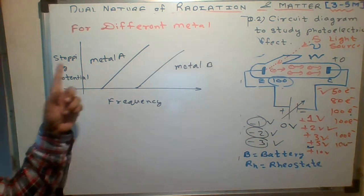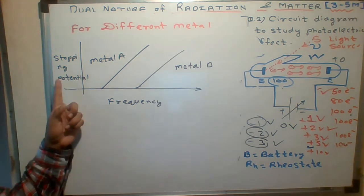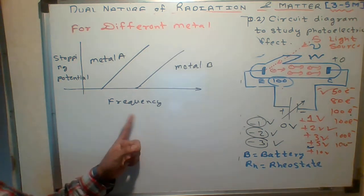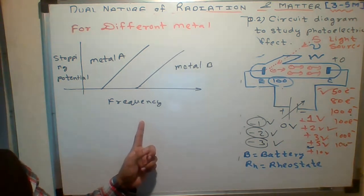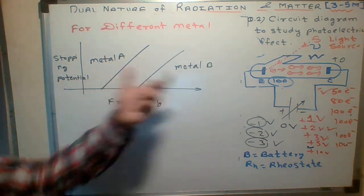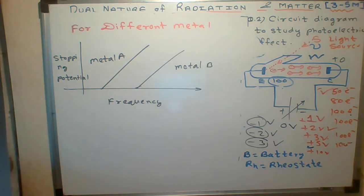What is the question? We have to understand the variation of stopping potential versus frequency. Which frequency? Frequency of radiation. So students, I took two metals: metal A and metal B.